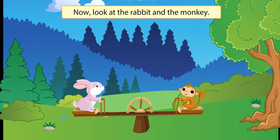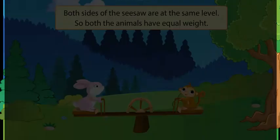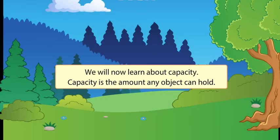Now look at the rabbit and the monkey. Both sides of the seesaw are at the same level. So both the animals have equal weight.